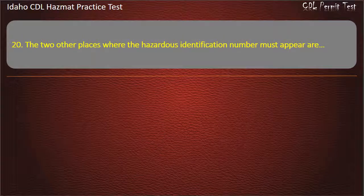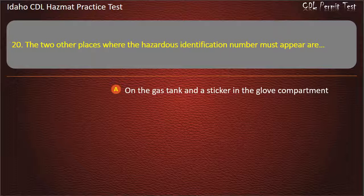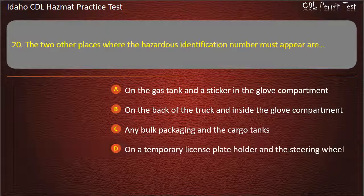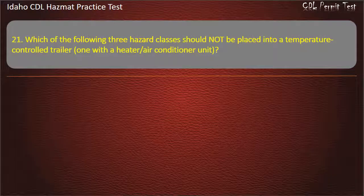Question 20. The two other places where the hazardous identification number must appear are: On the gas tank and a sticker in the glove compartment. On the back of the truck and inside the glove compartment. On any bulk packaging and the cargo tanks. On a temporary license plate holder and the steering wheel. Answer: On any bulk packaging and the cargo tanks.